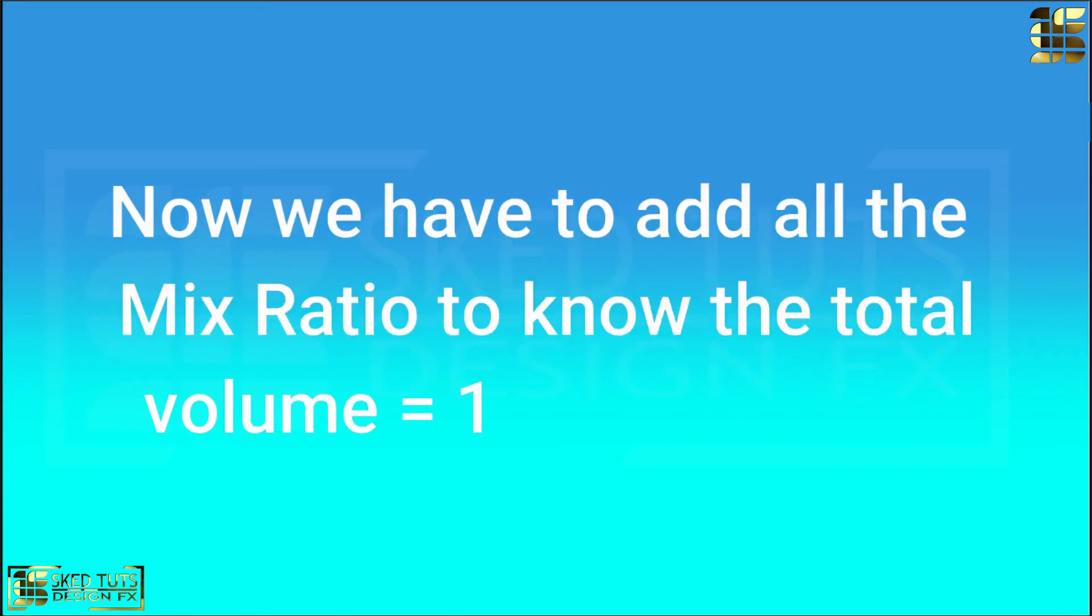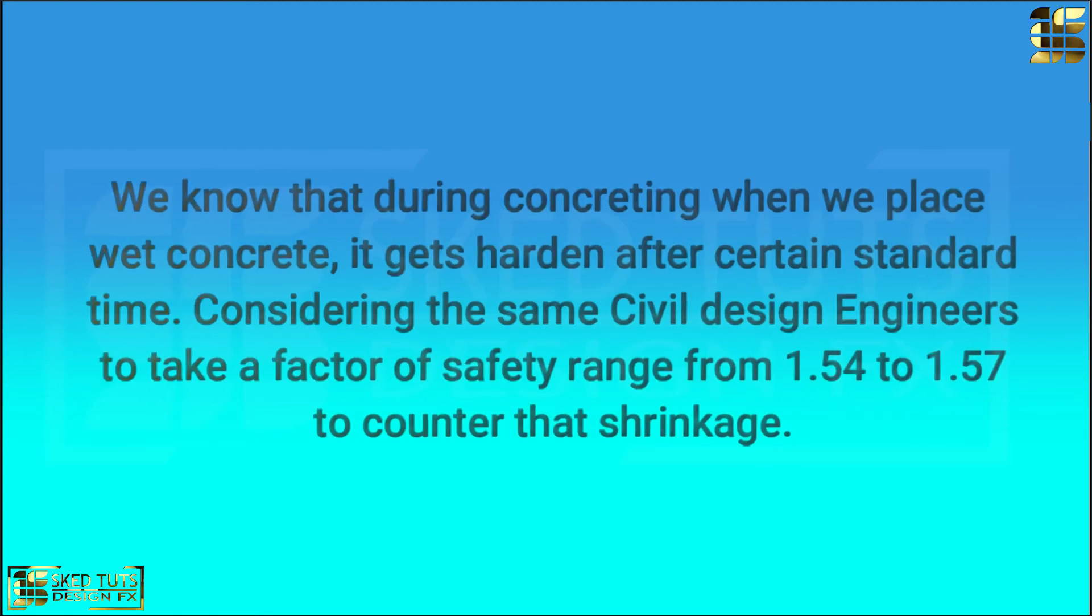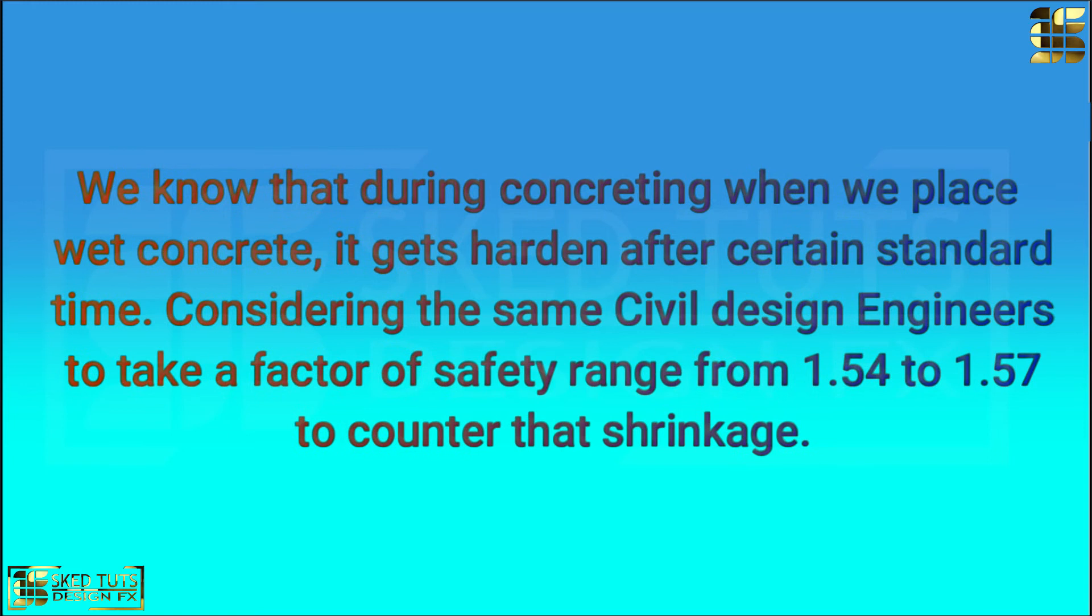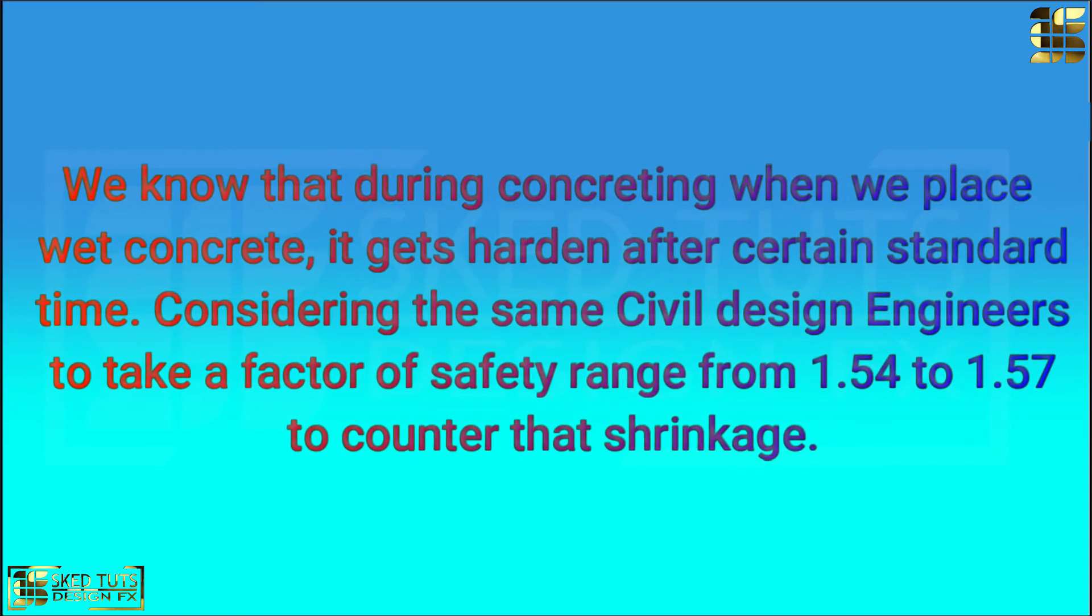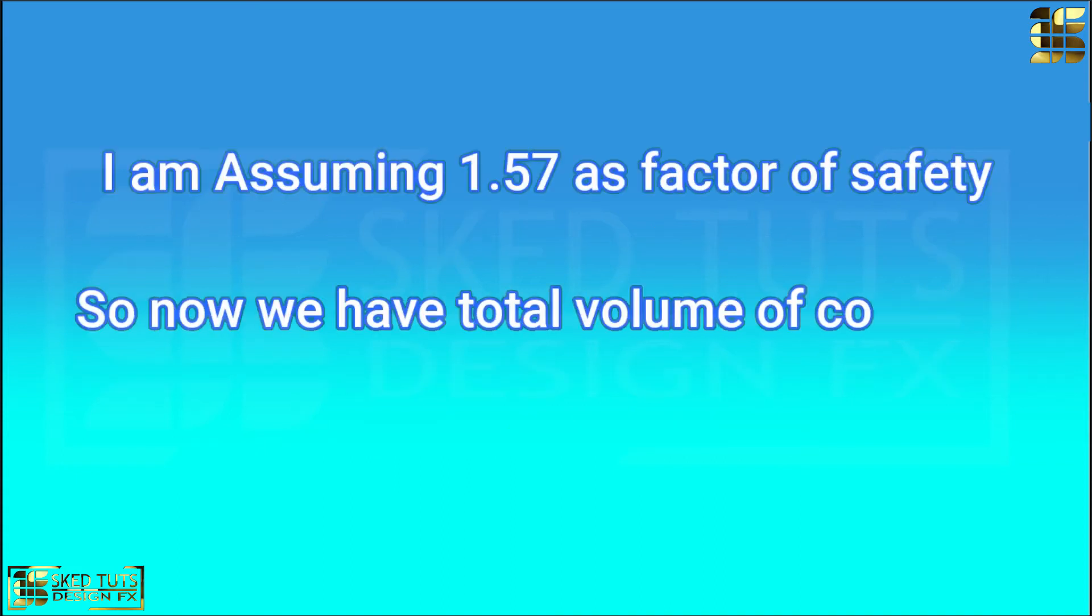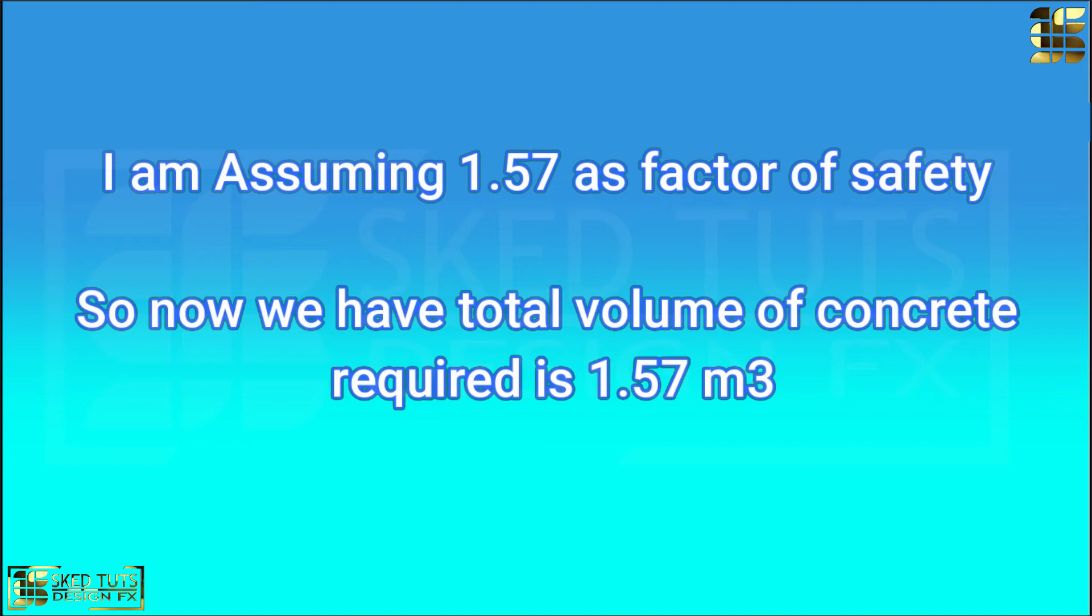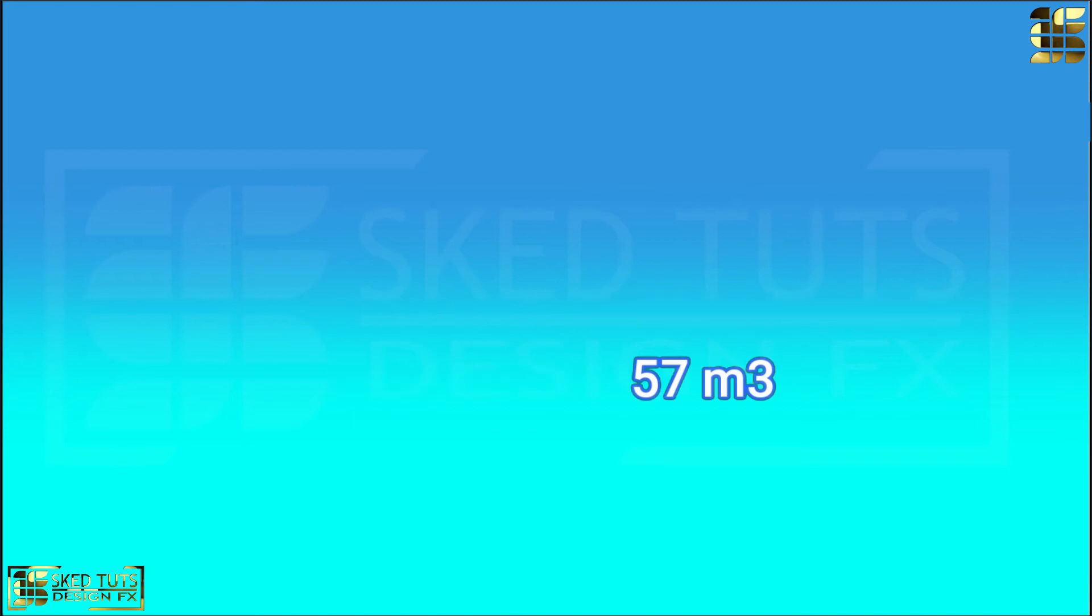Now we have to add all the mix ratio to know the total volume. 1 plus 1.5 plus 3 is equal to 5.5. Now we know the dream of concrete. When we place wet concrete, it get hardened after certain standard time. Considering the same civil design engineers to take a factor of safety range from 1.54 to 1.57 to counter the shrinkage. I am assuming 1.57 as factor of safety. So now we have total volume of concrete required is 1.57 in cubic meter.